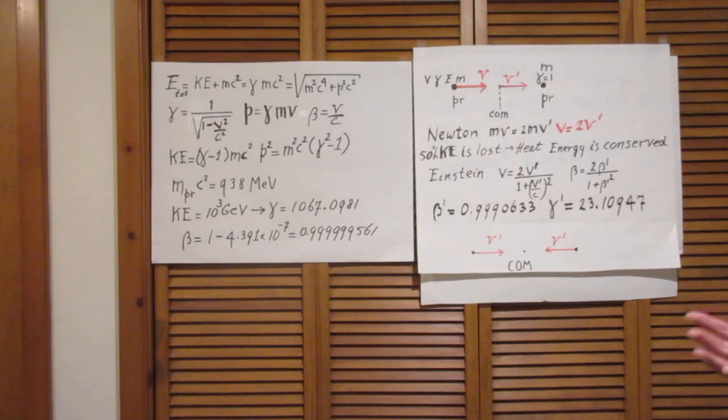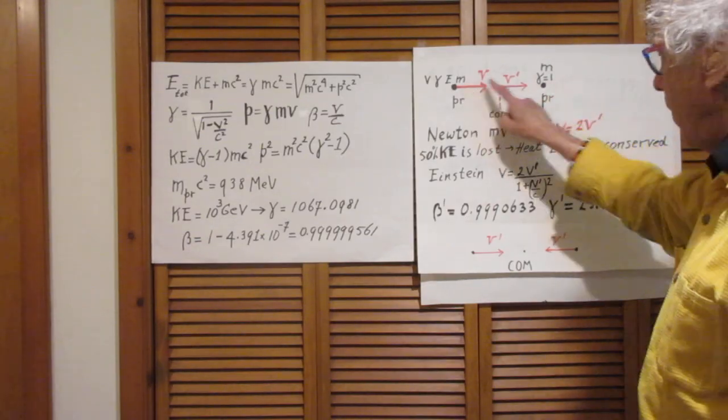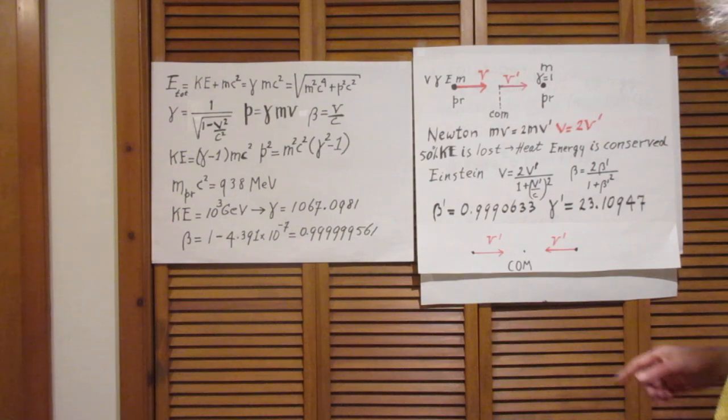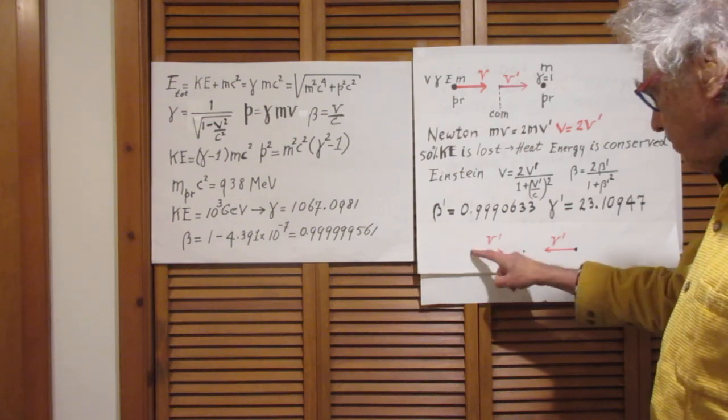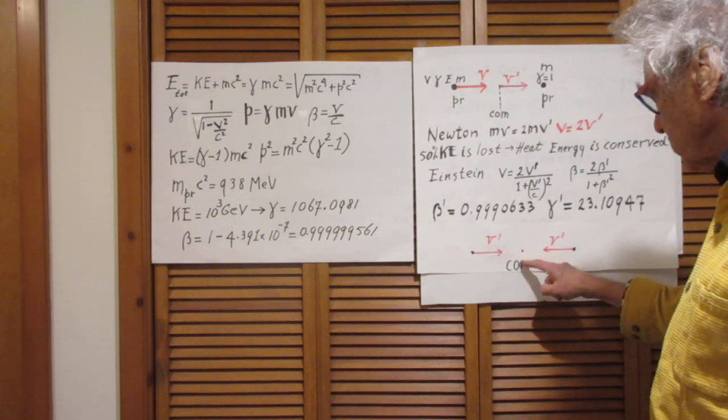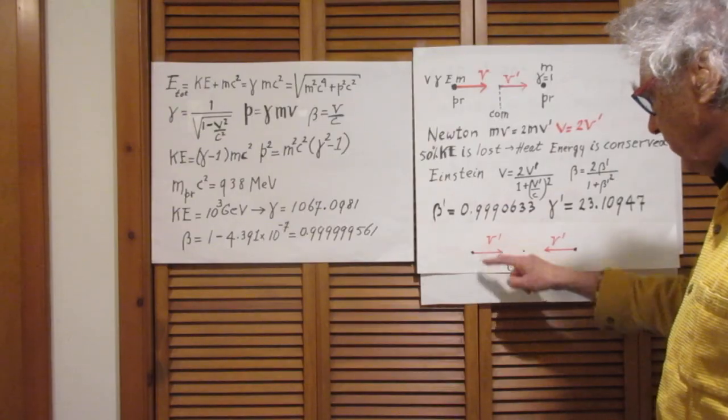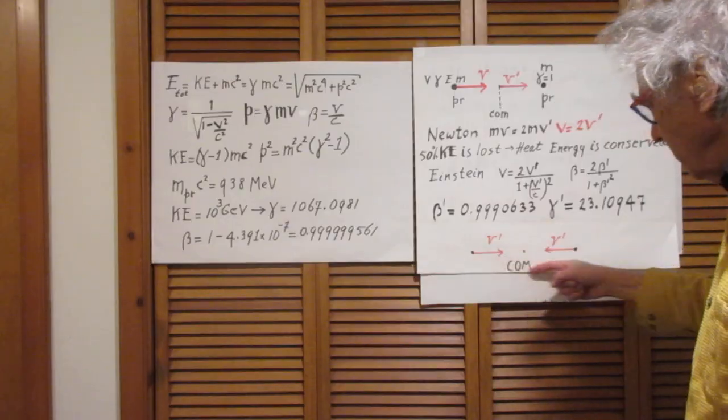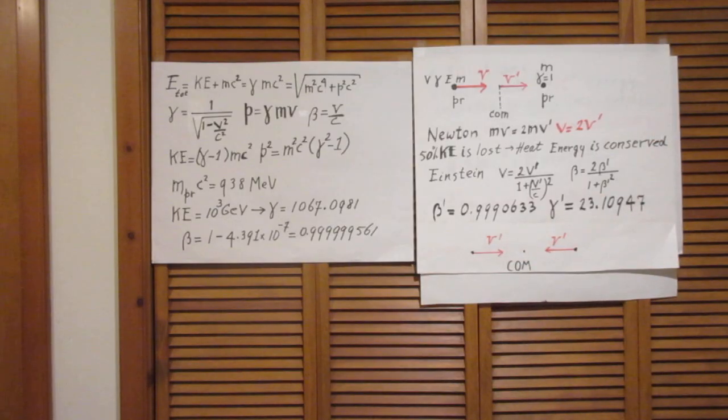Since in the center of mass, momentum is conserved, and since both particles have the same mass, therefore this particle must also approach the center of mass with the same V'. So in the center of mass, this is a nice way to look at the problem.